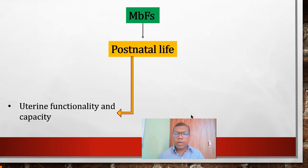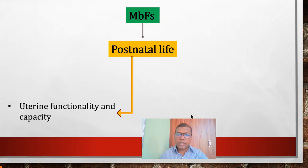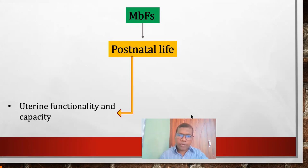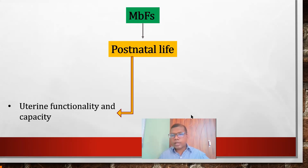One very important aspect for the pig system is uterine functionality and capacity. The uterine horn and uterus play a significant role for attachment. This uterine functionality starts from the newborn stage. When the newborn piglet gets a sufficient amount of colostrum — which is the first secretion of the mammary gland — it benefits their uterine development in adulthood.